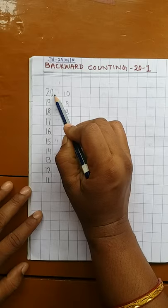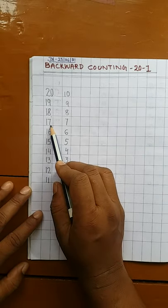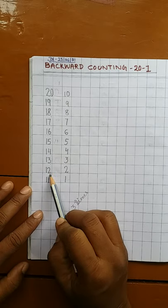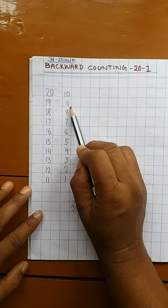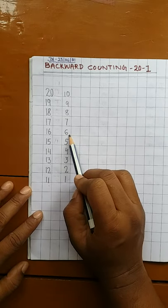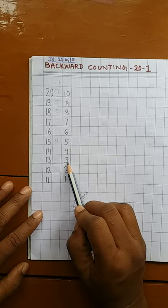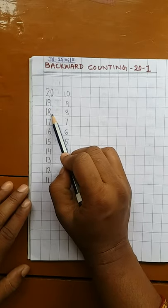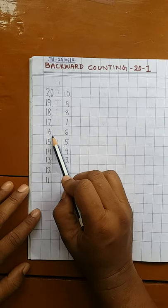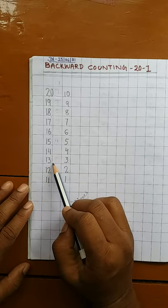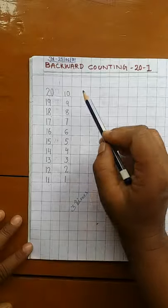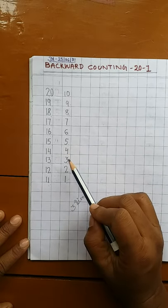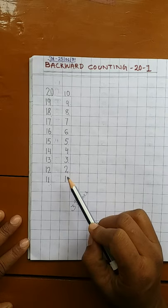20, 19, 18, 17, 16, 15, 14, 13, 12, 11, 10, 9, 8, 7, 6, 5, 4, 3, 2, 1. One more time: 20, 19, 18, 17, 16, 15, 14, 13, 12, 11, 10, 9, 8, 7, 6, 5, 4, 3, 2, 1.